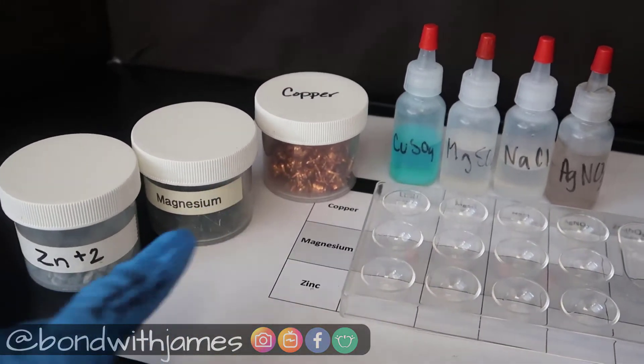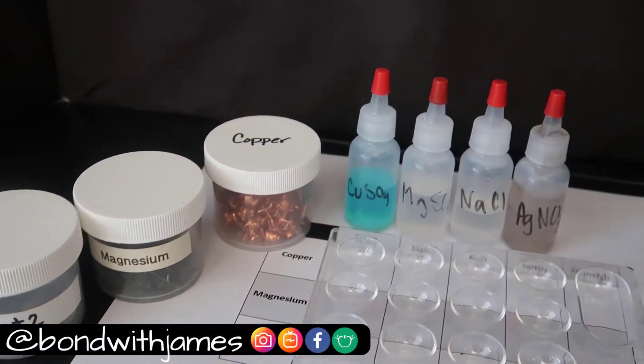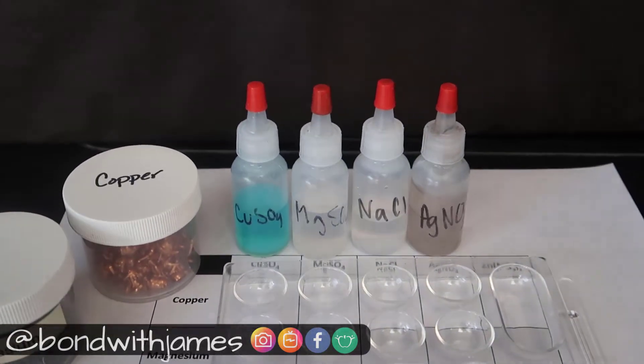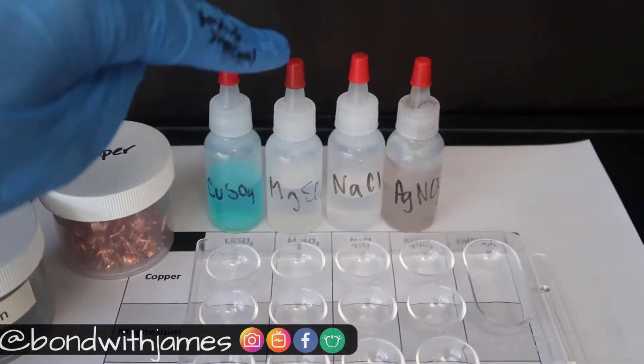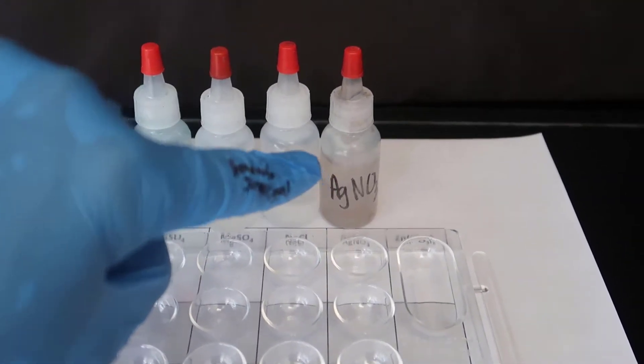In this lab, I am going to take three metals: copper, magnesium, and zinc, and I'm going to place a piece of each into a solution of copper sulfate, magnesium sulfate, sodium chloride, and silver nitrate.